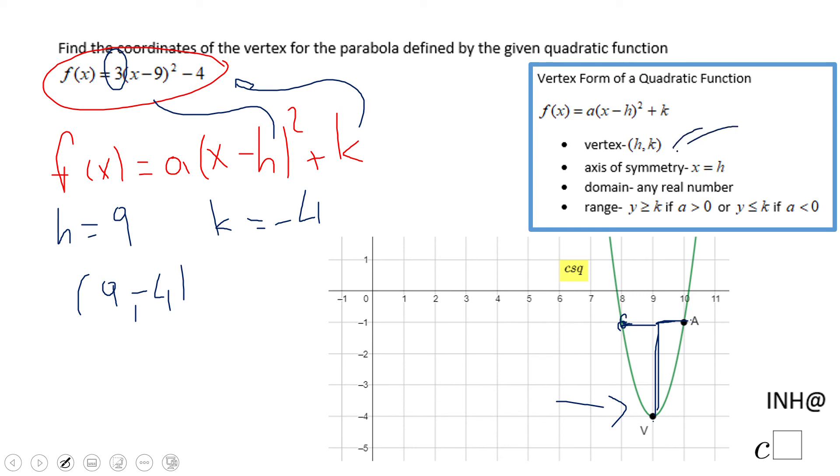So very important to remember this and also the other properties you see here are very useful sometimes when you have to solve a problem. In this case that's it, the vertex is 9 and negative 4.